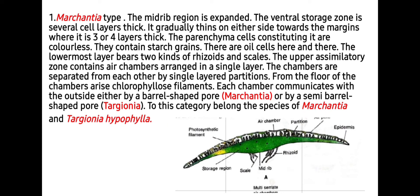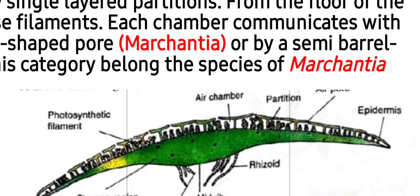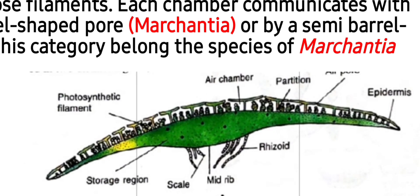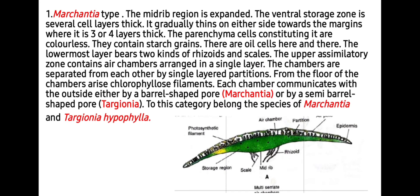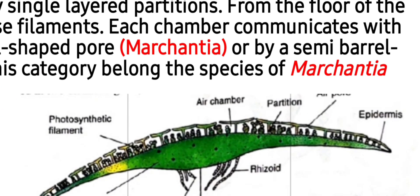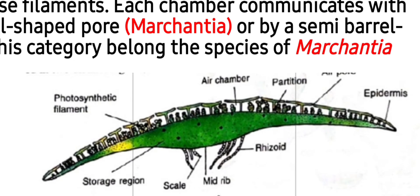The first is Marchantia type. The midrib region is expanded and the ventral storage zone is several cells thick, gradually thinning on either side toward the margins where it is three or four layers thick, forming wings. The parenchyma cells constituting it are colorless and contain starch grains, with oil cells present here and there. The lowermost layer bears two kinds of rhizoids and scales. The upper assimilatory zone contains air chambers arranged in a single row, and the ventral surface bears rhizoids and scales.